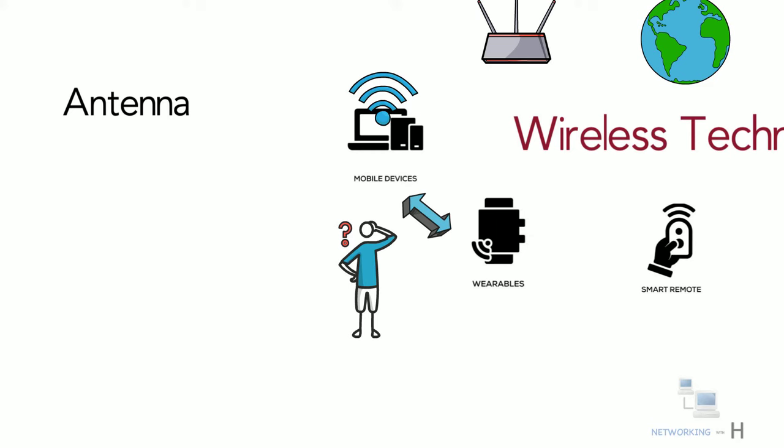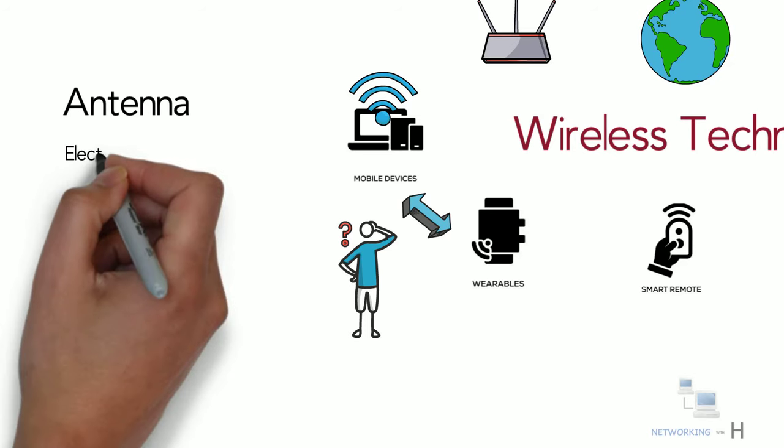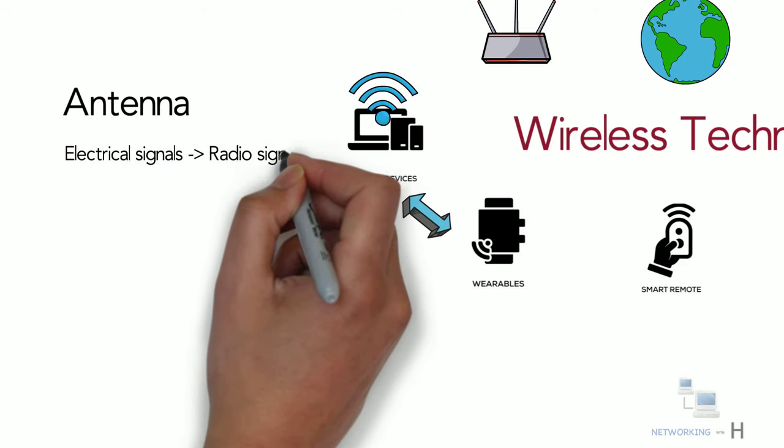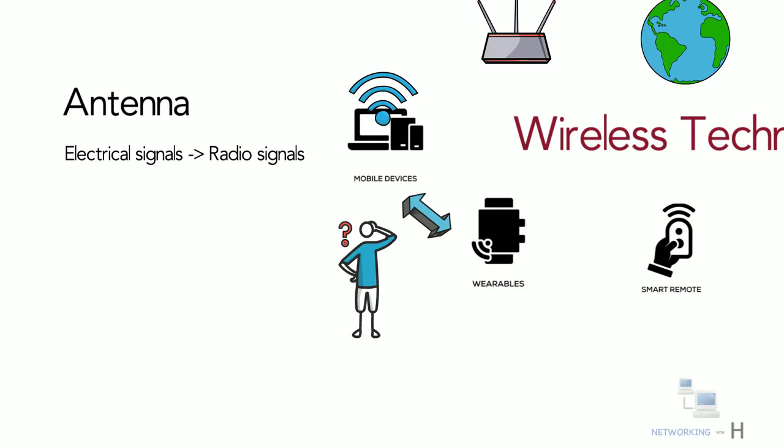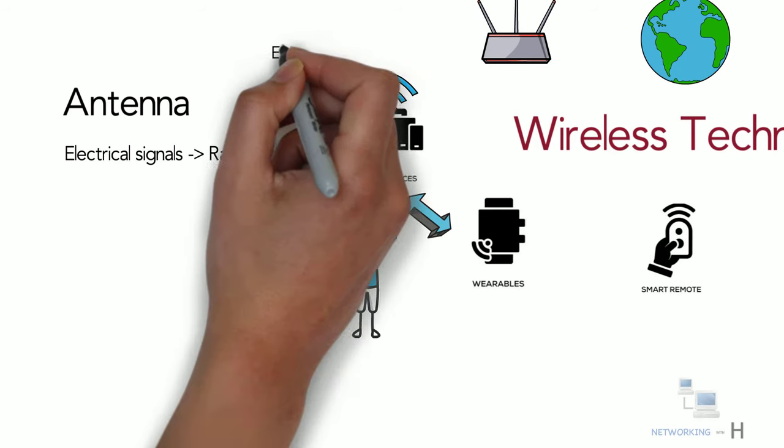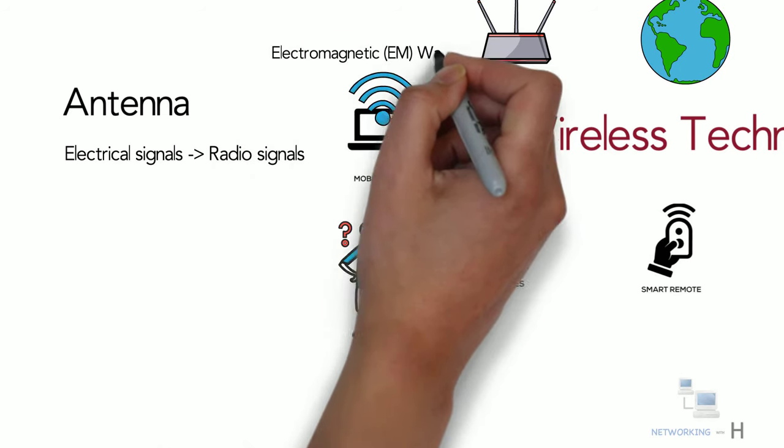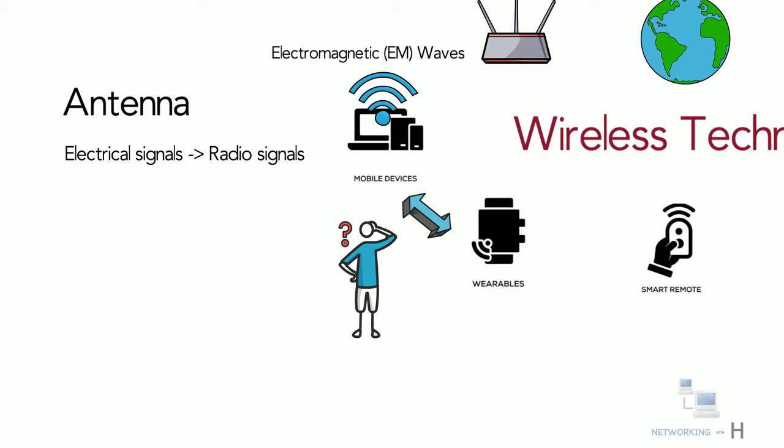Antennas are electrical devices that transform electrical signals to radio signals in the form of electromagnetic waves. Electromagnetic waves do not travel in straight lines. Instead, they travel by expanding in all directions away from the antenna.